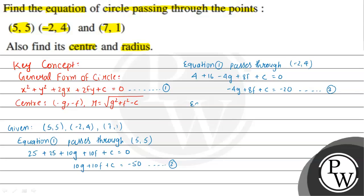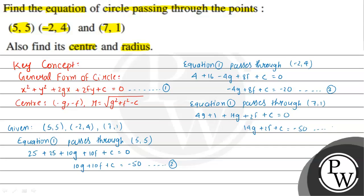Similarly, when the circle passes through the third point (7,1), we substitute x = 7 and y = 1. We get 49 + 1 + 14g + 2f + c = 0. Therefore, we can write this as 14g + 2f + c = -50. This is equation 4.